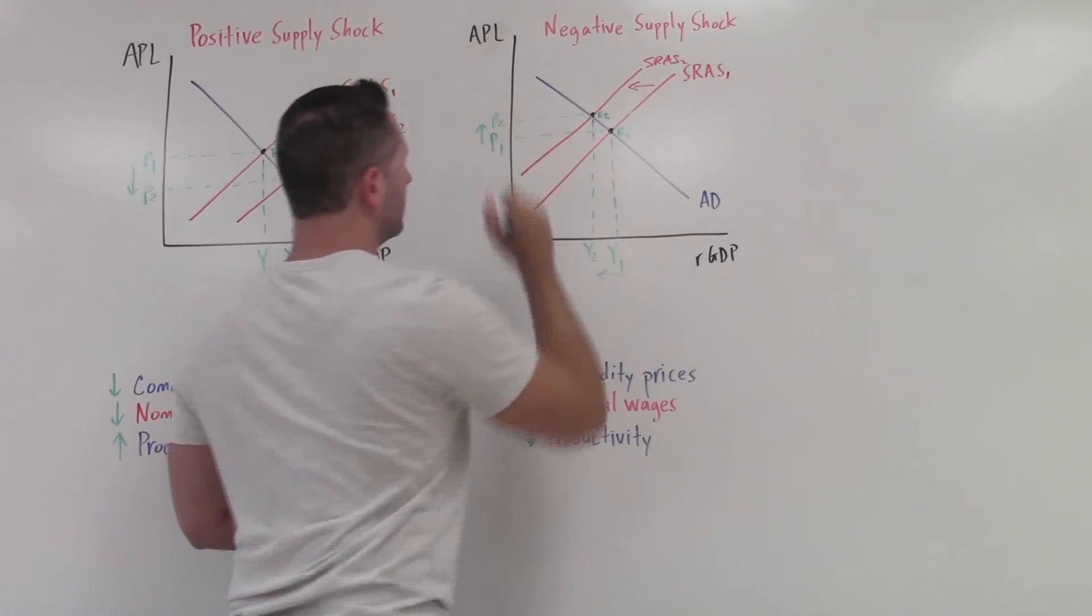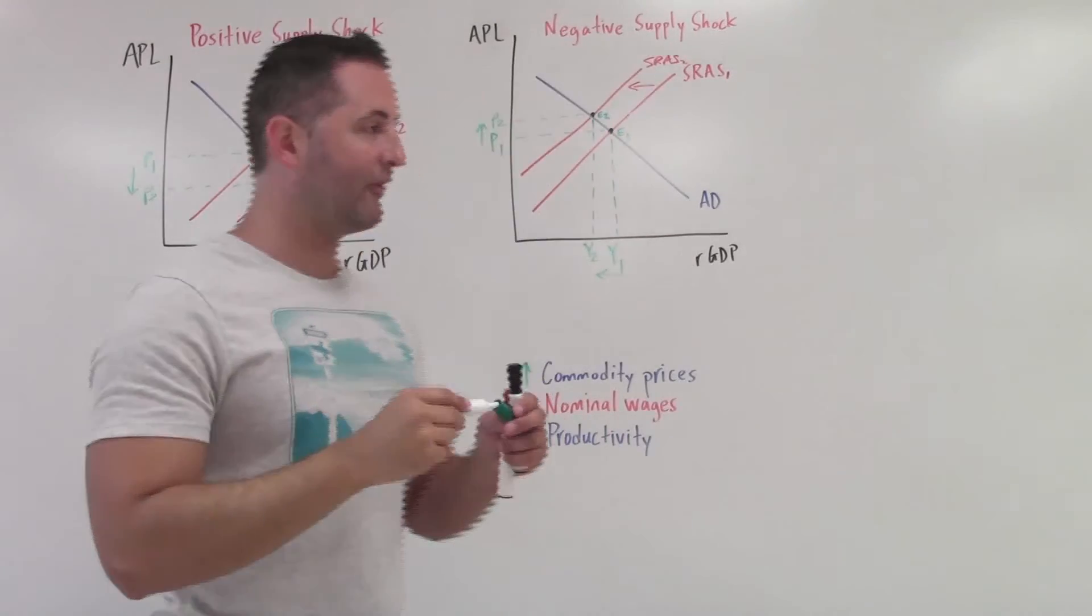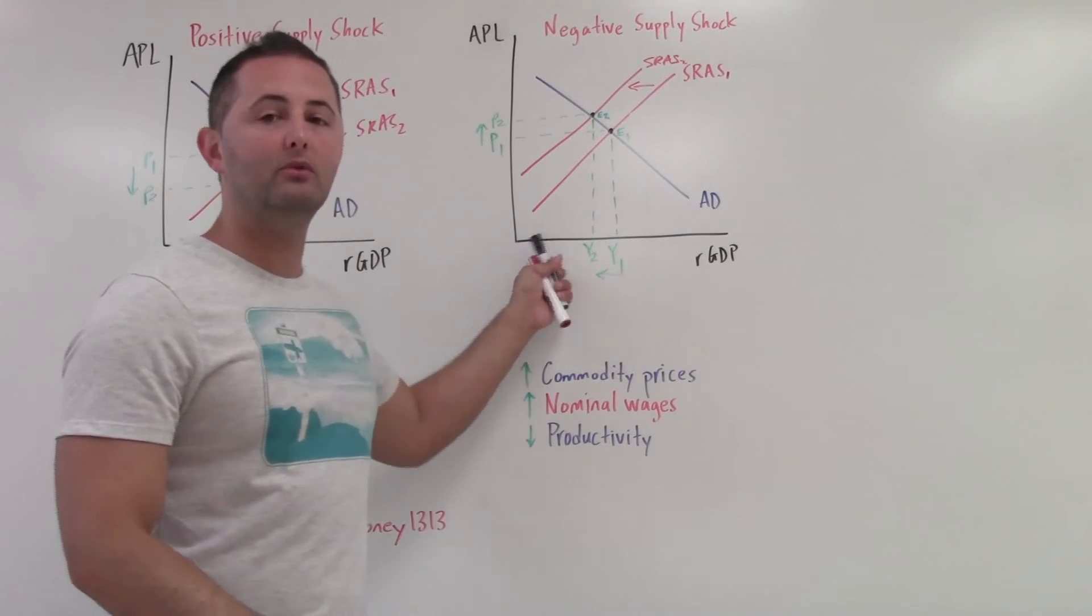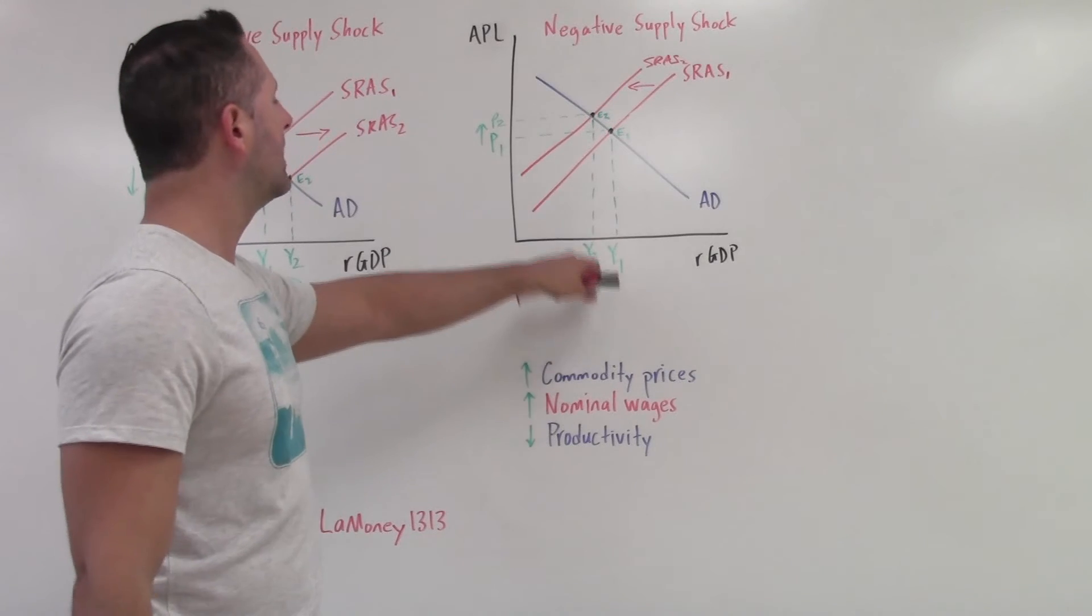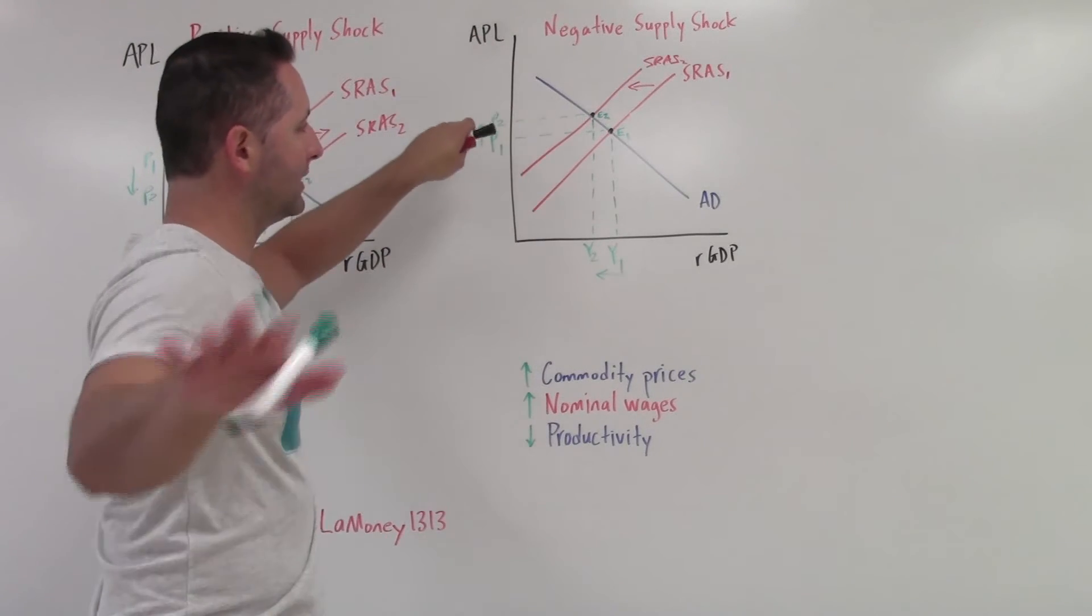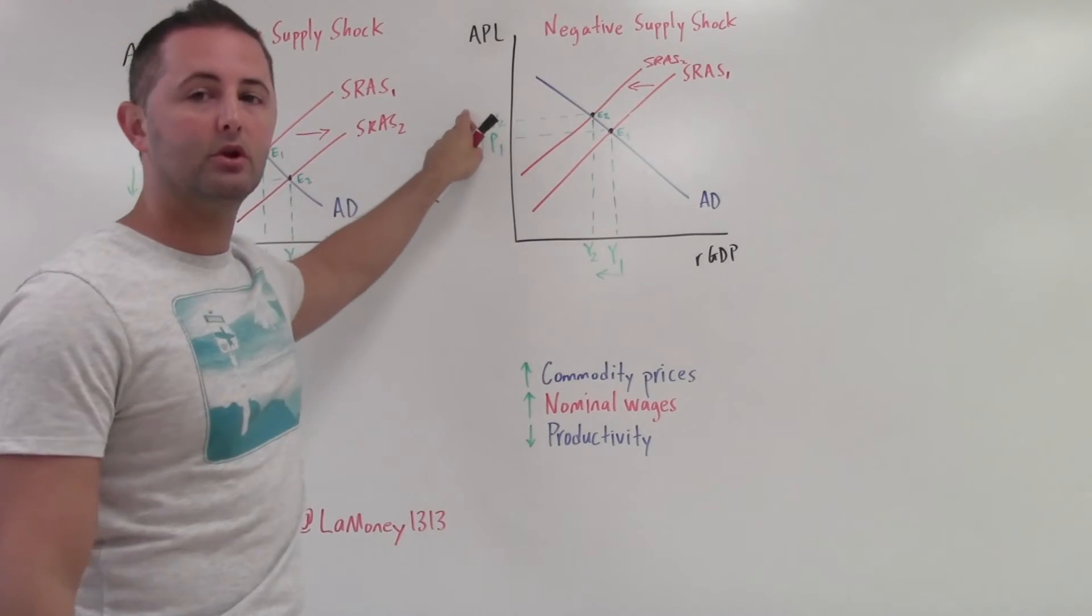But we're paying more for it. Price level is increasing. So we have higher prices combined with less output. And that is not a good combination. So we're producing less stuff. But our prices are going up.